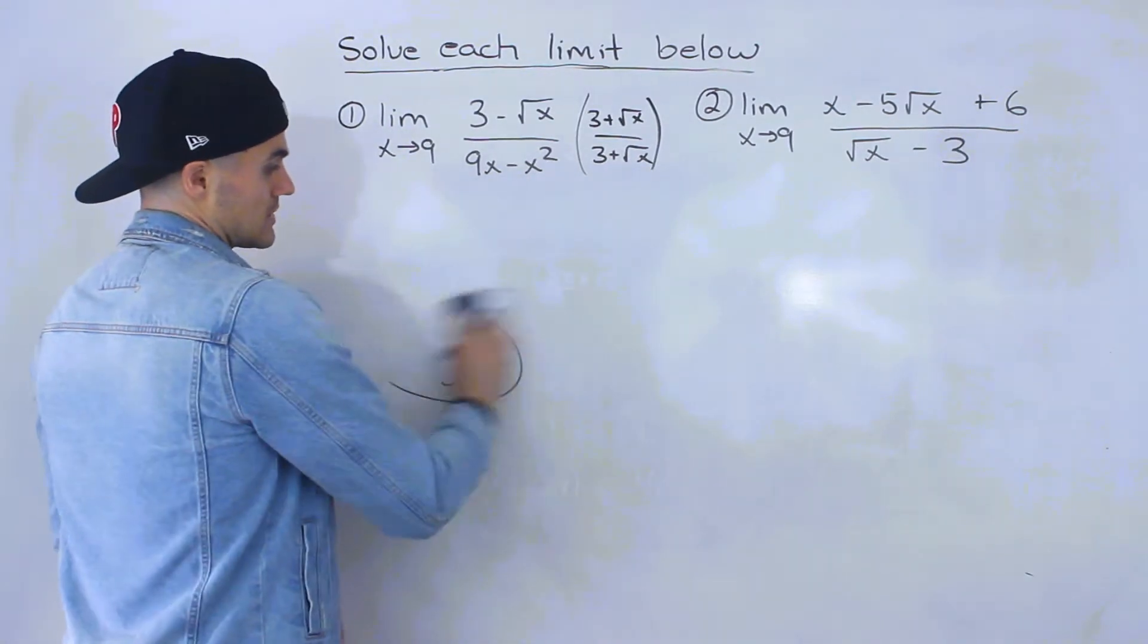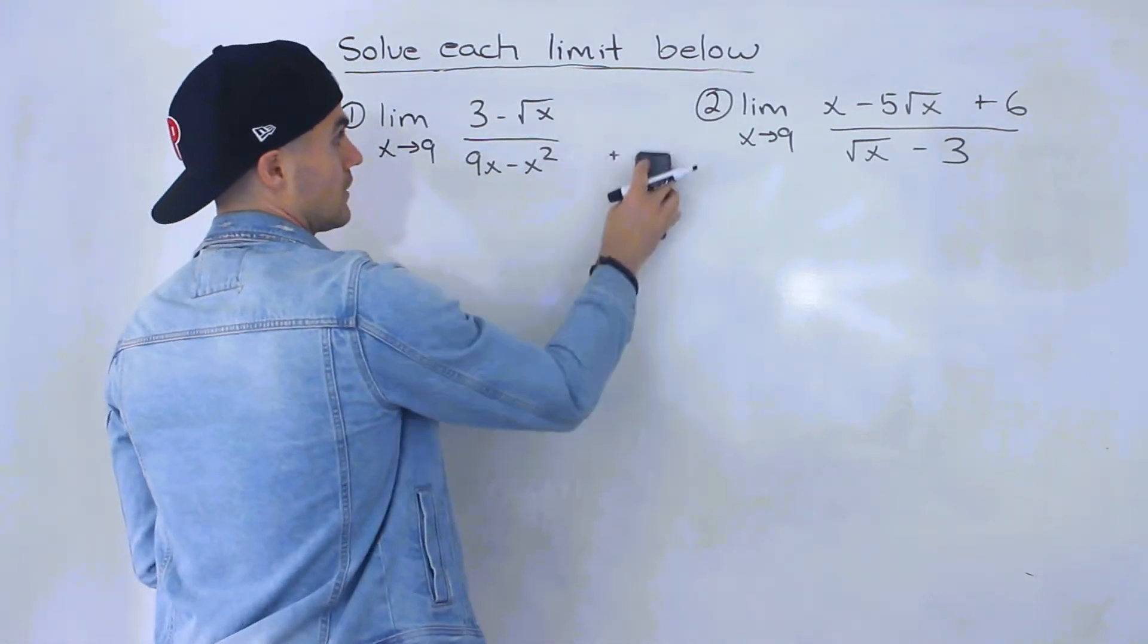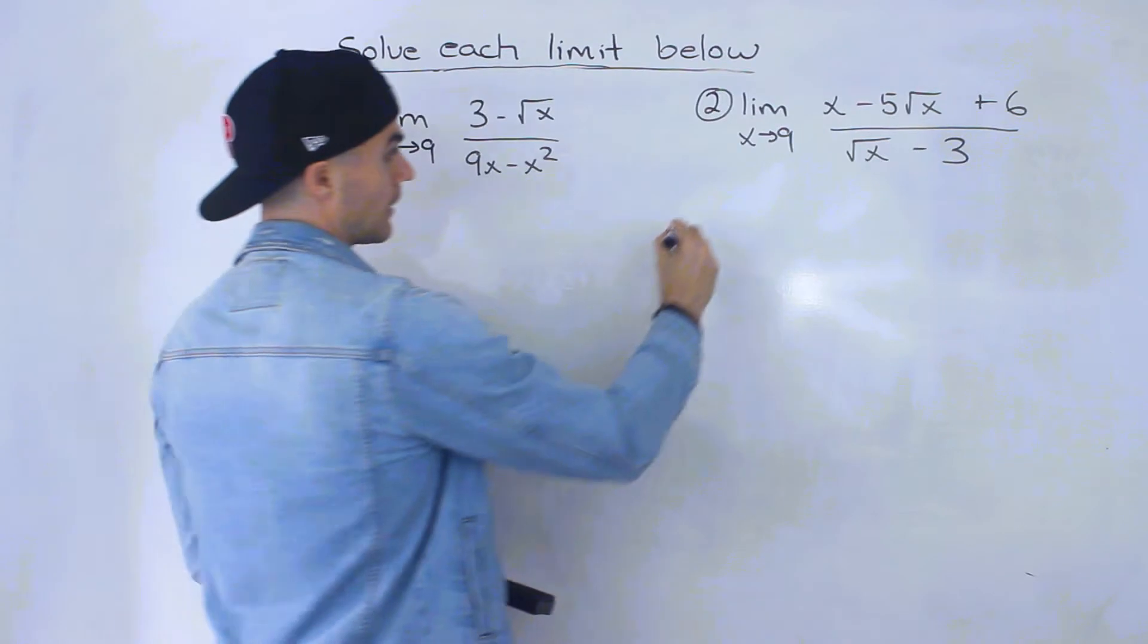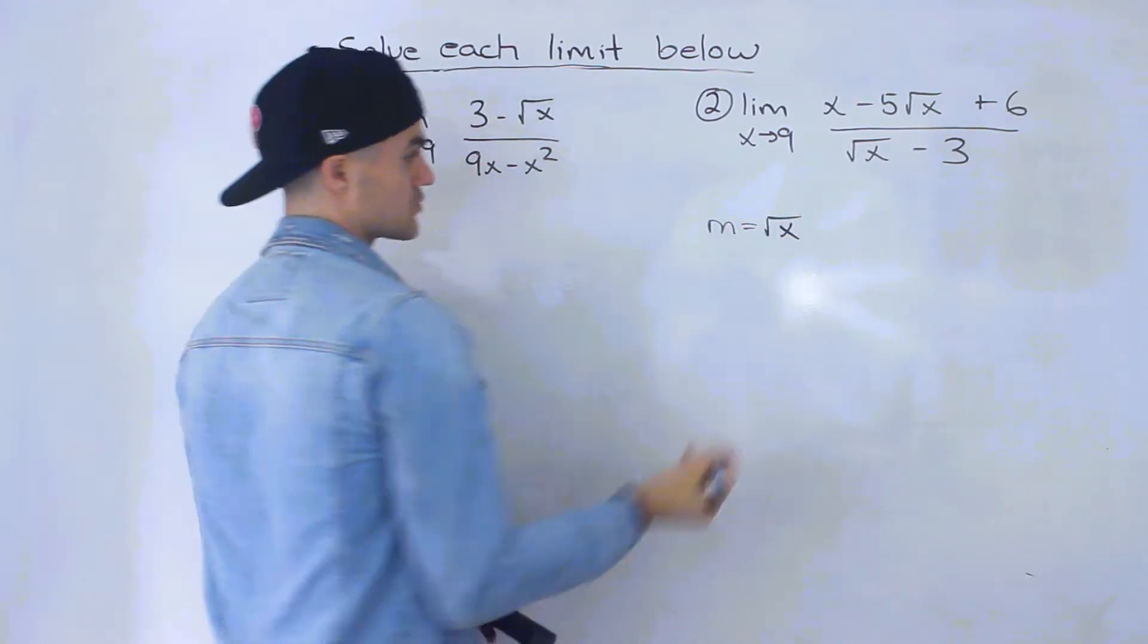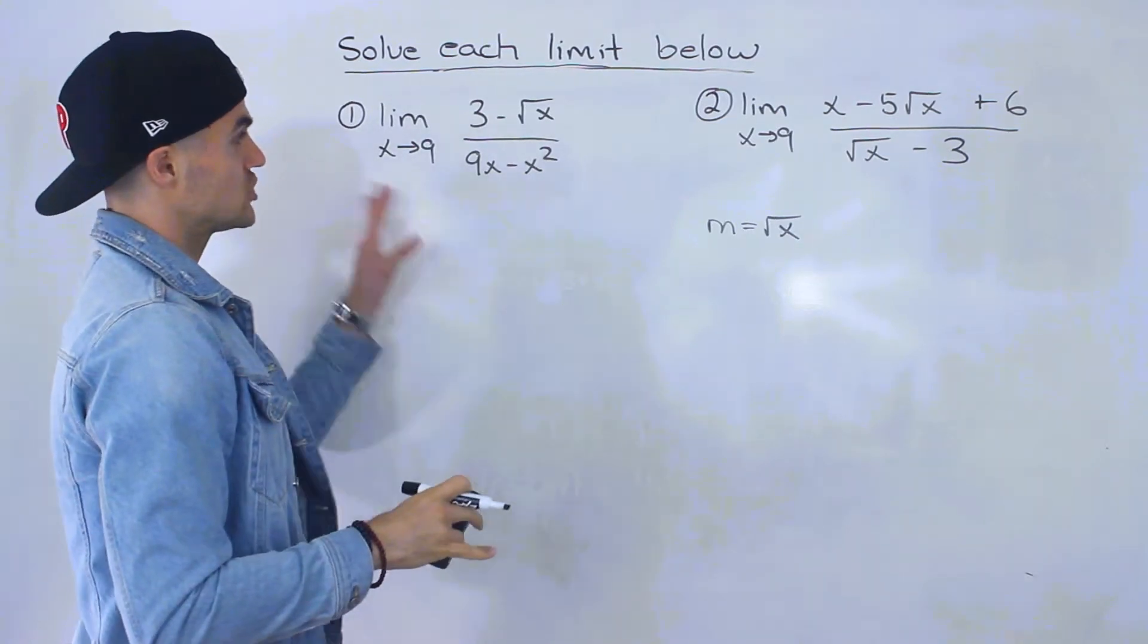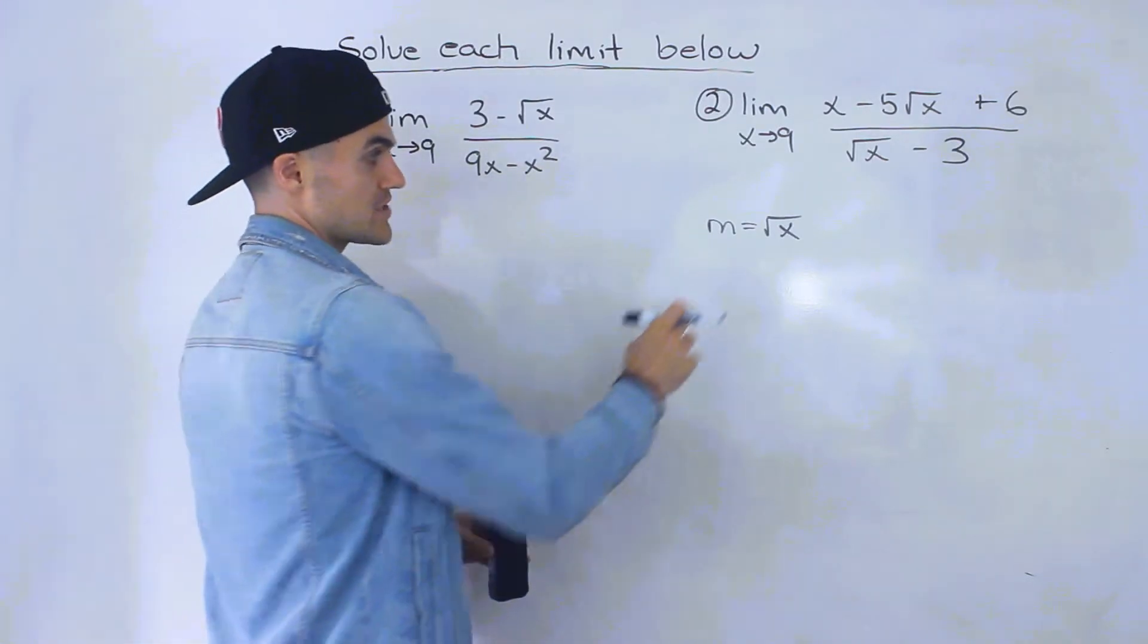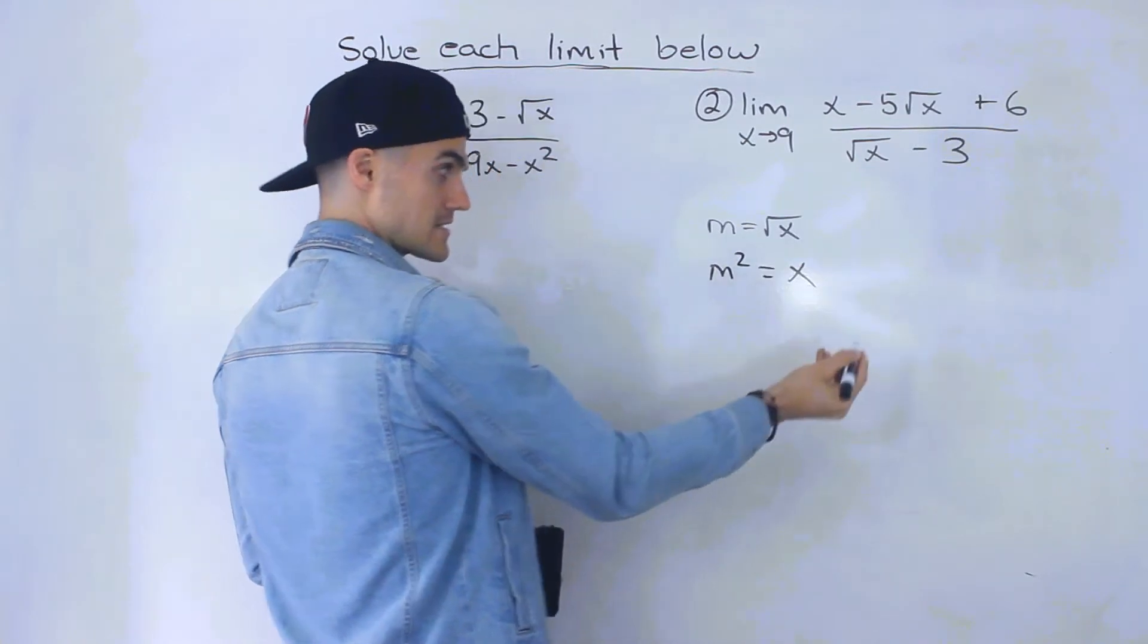The second way is with a change of variable. We can let m equal the square root of x. Then we have to change everything else to be in terms of m. If we square both sides, we'd have m squared equals x.